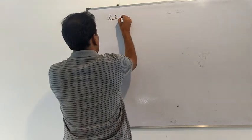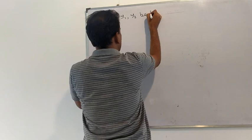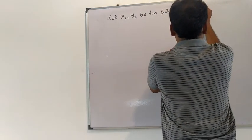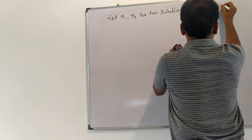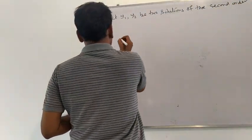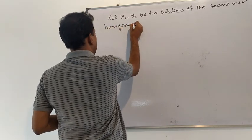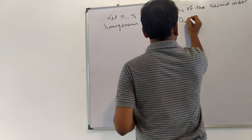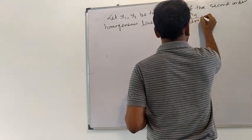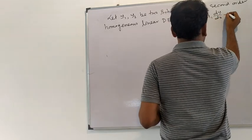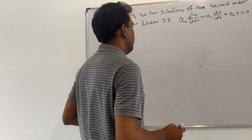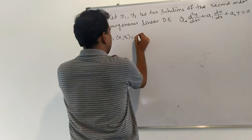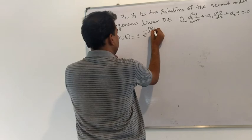Let y1, y2 be two solutions of the second order homogeneous linear differential equation: a0·(d²y/dx²) + a1·(dy/dx) + a2·y = 0. Then the Wronskian of y1, y2 is equal to C·e^(−∫(a1/a0)dx), where C is a constant.